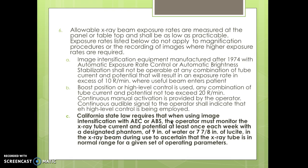Boost mode, or high level control, is used when any combination of tube current and potential must not exceed 20 R per minute. Continuous manual activation is provided by the operator, and a continuous audible signal shall indicate that the high level control is being employed. The State of California requires that when using image intensification with ABC or ABS, the operator must monitor the x-ray tube current and potential at least once a week with a designated phantom of nine inches of water or seven-eighths inch of Lucite in the x-ray beam, to ascertain that the x-ray tube is within normal range for its given operating parameters.